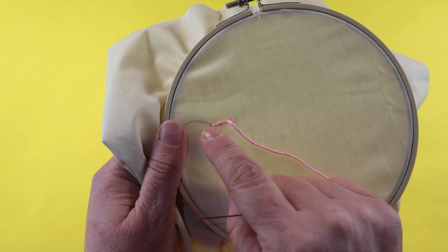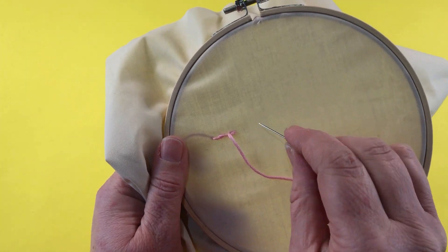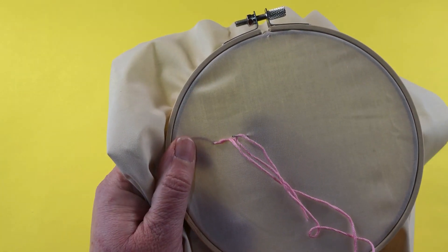As we can see it's making a rope type of stitch which looks very decorative and very pretty and perfect for hand embroidery.